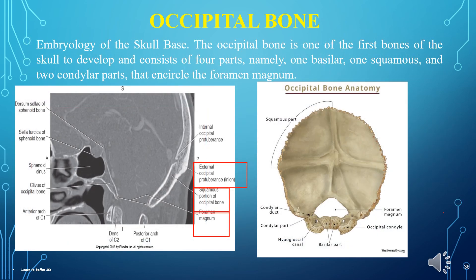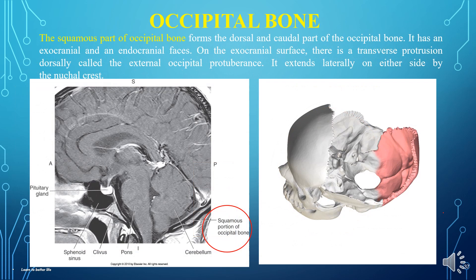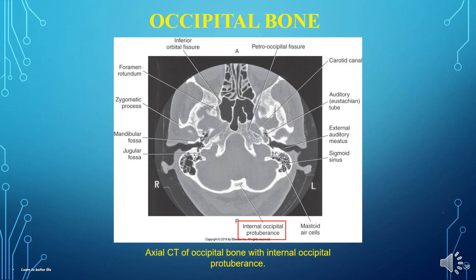The occipital bone is one of the first bones of the skull to develop and consists of four parts: one basilar, one squamous, and two condylar parts, that encircle the foramen magnum. The squamous part forms the dorsal and caudal part of the occipital bone and has exocranial and endocranial faces. On the exocranial surface there is a transverse protrusion called the external occipital protuberance, which extends laterally on either side by the nuchal crest. This is the axial CT of the occipital bone with internal occipital protuberance.